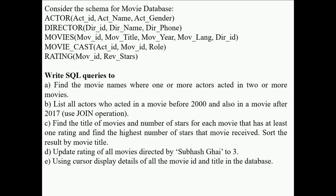The queries are: find the movie names where one or more actors acted in two or more movies; list all the actors who acted in a movie before 2000 and also in a movie after 2017, using join operation; find the title of movies and number of stars for each movie that has at least one rating, finding the highest number of stars and sorting by movie title; update the rating of all movies directed by Subhash Gai to 3; and use a cursor to display all the details of all the movies along with their id and title from the database.